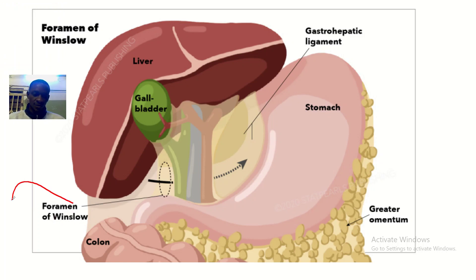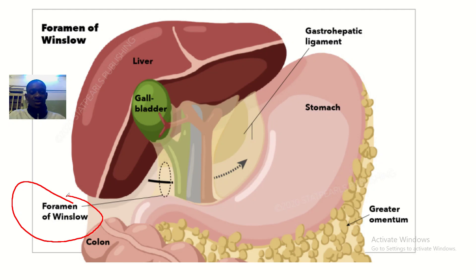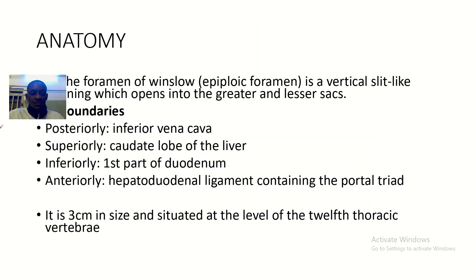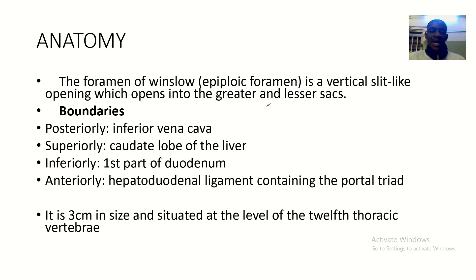So the foramen of Winslow — as common knowledge, you could know that it is located in the abdominal cavity among the abdominal organs. The foramen of Winslow is a vertical slit-like opening which opens into the greater and the lesser sacs.